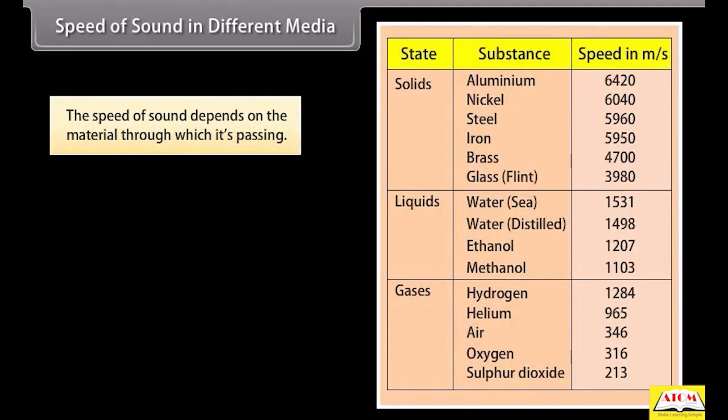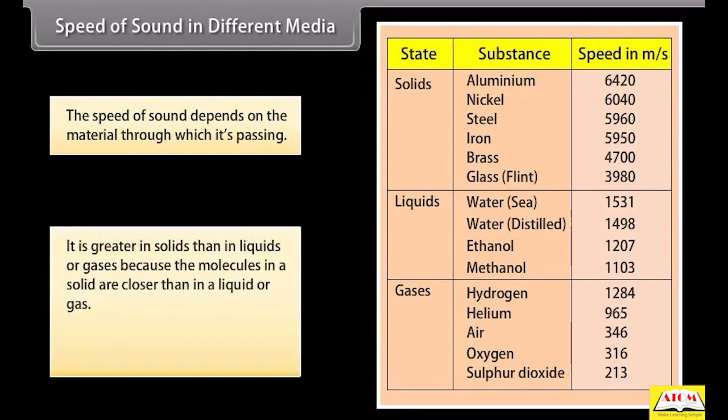Speed of sound in different media. The speed of sound depends on the material through which it is passing. It is greater in solids than in liquids or gases because the molecules in a solid are closer than in a liquid or gas. In this table, you can find the speed of sound in different media at 25 degrees Celsius.